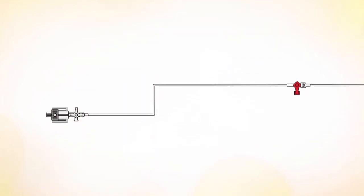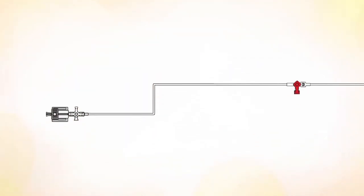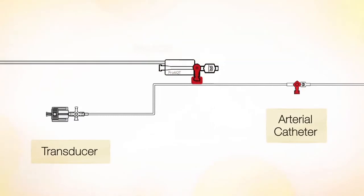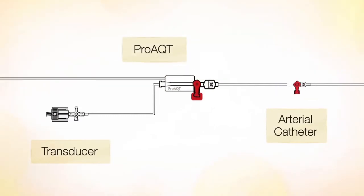Proact Sensor. To set up the Proact Sensor, install it between the arterial catheter and the transducer. It can be any arterial catheter. Prime the complete system.